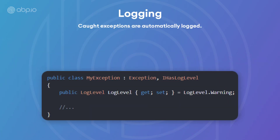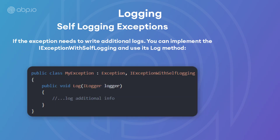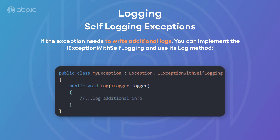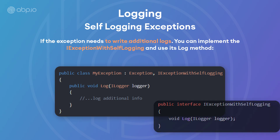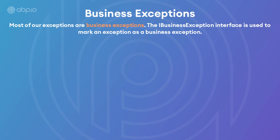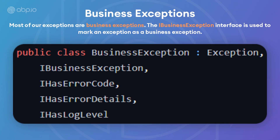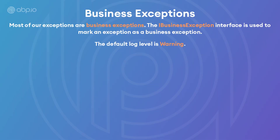All exceptions are automatically logged, and exceptions are logged with the error level by default. You can implement the IHasLogLevel interface if you want to determine the log level yourself. If the exception needs to write additional logs, you can implement the IExceptionWithSelfLogging interface and use its log method. Most exceptions are business exceptions, and you can use the IBusinessException interface to mark an exception as a business exception. The business exception class implements IBusinessException in addition to the IHasErrorCode, IHasErrorDetails, and IHasLogLevel interfaces.